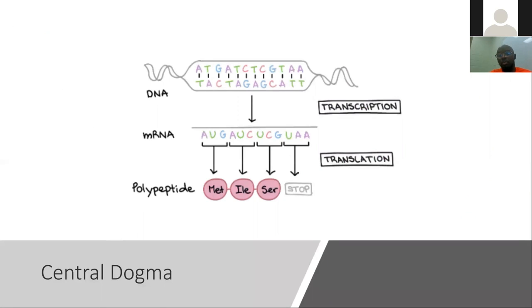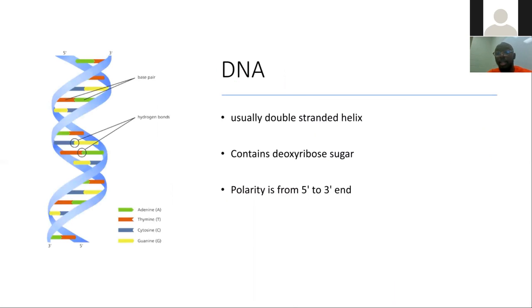The central dogma explains the flow of genetic information from DNA down to polypeptides or proteins. The flow from DNA to RNA is called transcription, while from RNA to polypeptide is called translation. DNA is usually a double-stranded helix containing deoxyribose sugar, with polarity running from the 5' end to the 3' end, and nucleobases adenine, thymine, cytosine, and guanine — adenine binds with thymine, and cytosine binds with guanine.